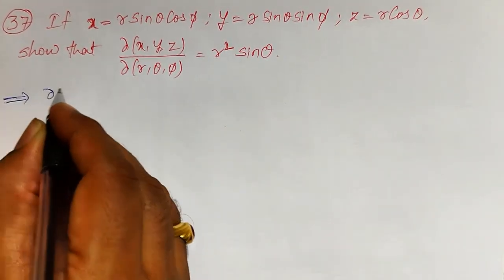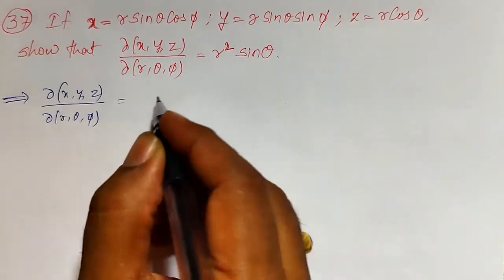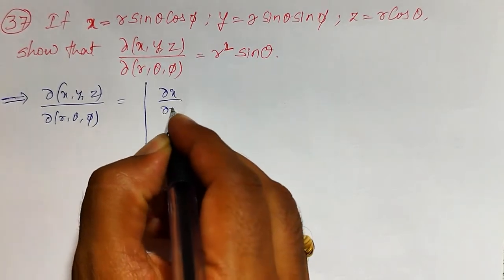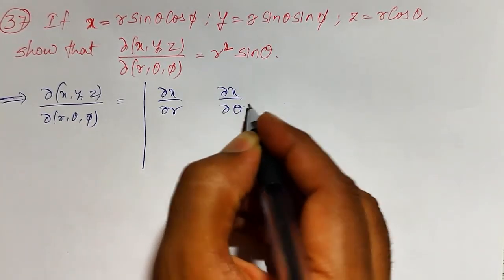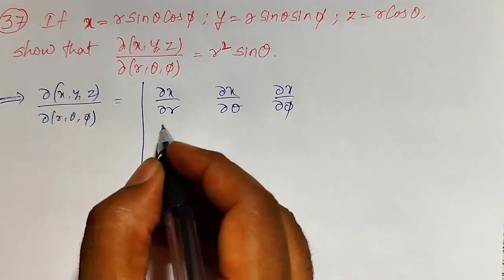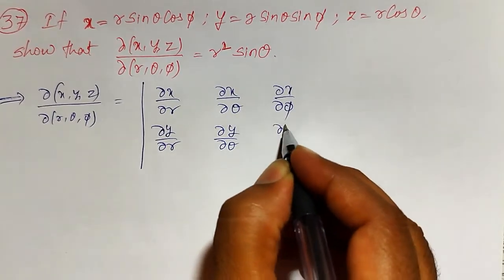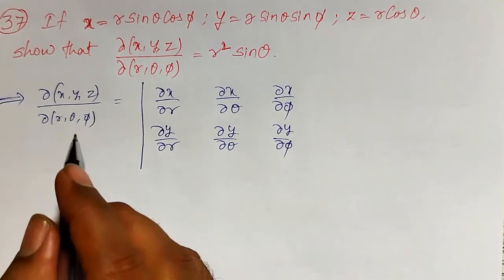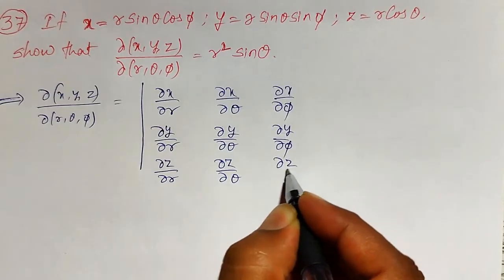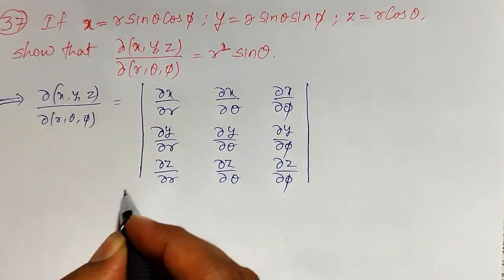The Jacobian ∂(x,y,z)/∂(r,θ,φ) is defined as a determinant. The first row is ∂x/∂r, ∂x/∂θ, ∂x/∂φ. The second row is ∂y/∂r, ∂y/∂θ, ∂y/∂φ. The third row is ∂z/∂r, ∂z/∂θ, ∂z/∂φ. This is how we define the Jacobian. Now let me find out the partial derivatives of x, y, z with respect to r, θ, φ for the determinant.